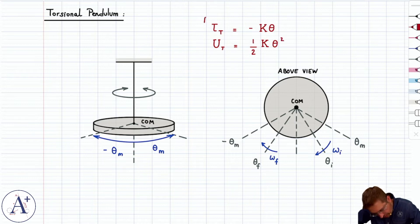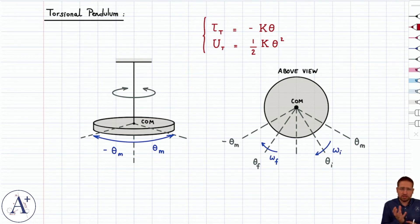Notice that this really mirrors the spring force. The spring force is minus kx, and the elastic potential energy associated with the spring force is one-half kx squared. So we see the parallel here, except in the case of the torsional pendulum, the oscillations involve rotational motion, and so we need angular position theta rather than just position x.